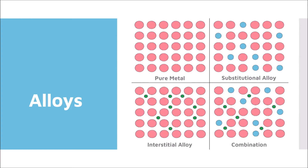The first type of alloy is a substitutional alloy. In a substitutional alloy, atoms from the pattern have been removed and a new atom has been put into their place — atoms have been substituted into the original pattern of the pure metal.